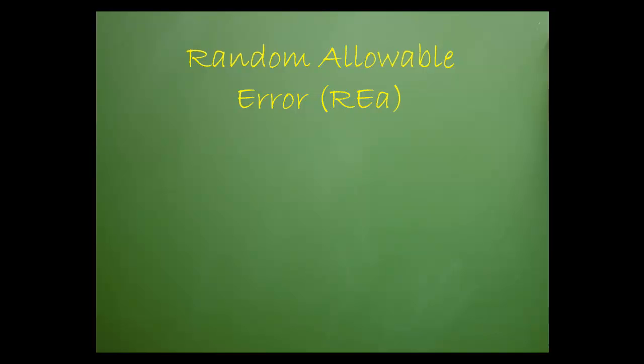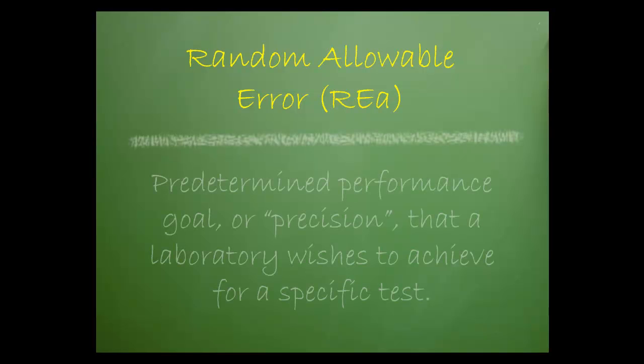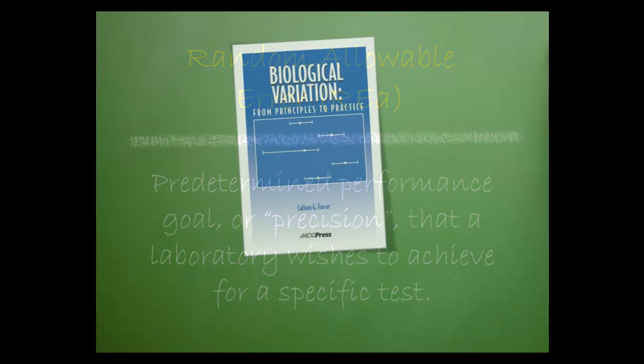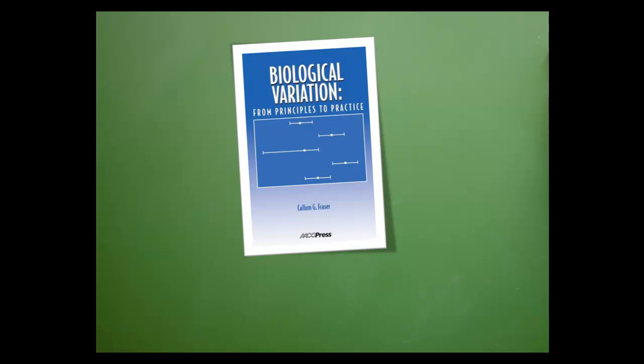Now that we understand random error, let's define random allowable error. Random allowable error is a predetermined performance goal, or precision, that a laboratory wishes to achieve for a specific test. To calculate random allowable error, we'll be using formulas described by Dr. Cullum Frazier in his book entitled Biological Variation From Principles to Practice.